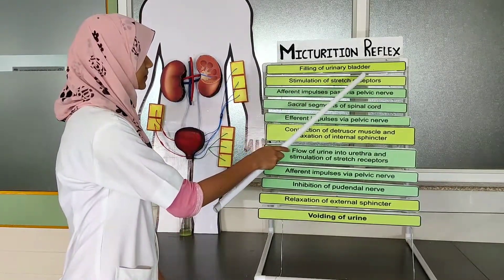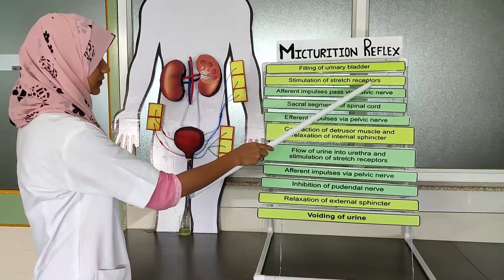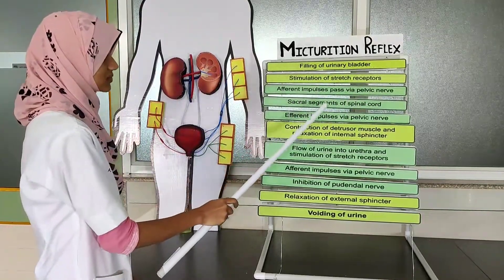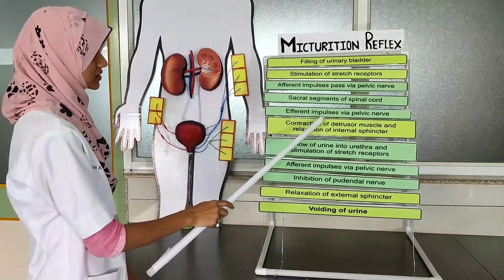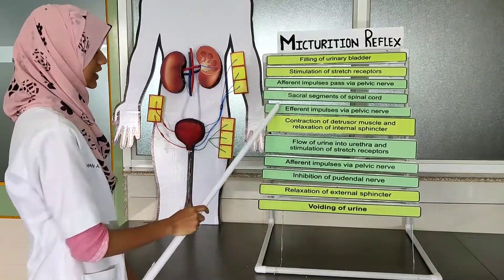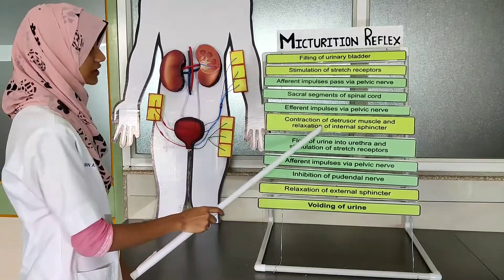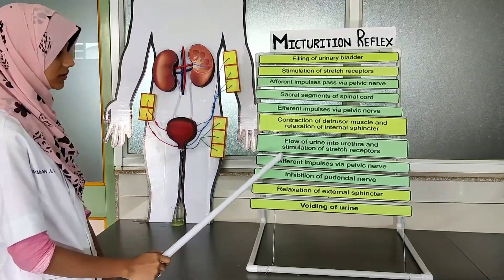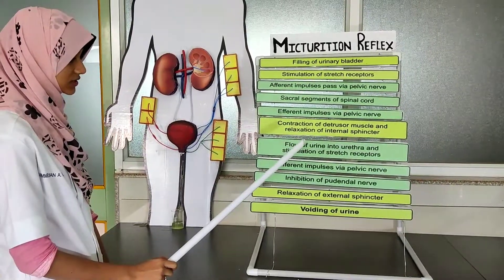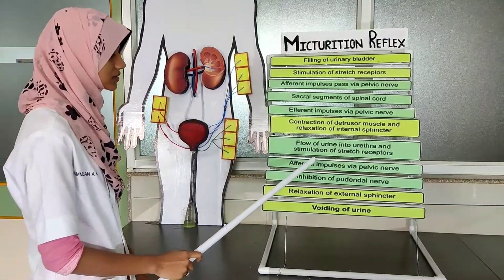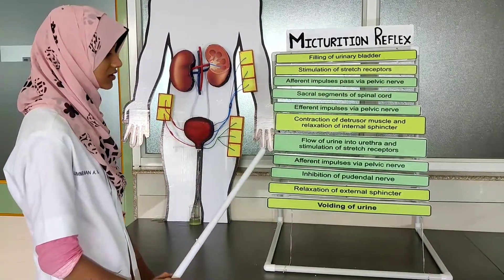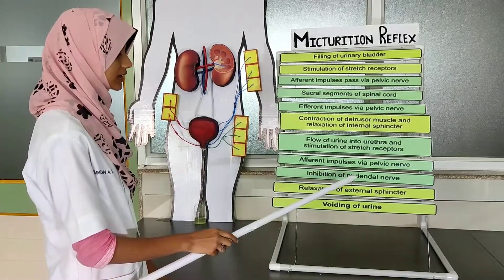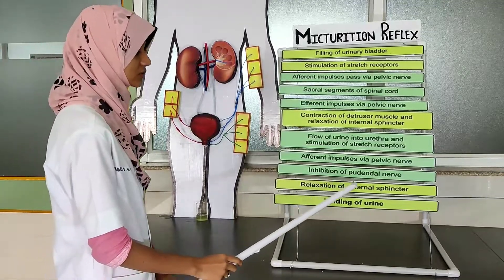To summarize the micturition reflex: filling of the urinary bladder leads to stimulation of stretch receptors, which produce afferent impulses passing via the pelvic nerve to the sacral segment of the spinal cord. Efferent impulses then pass through the pelvic nerve to the urinary bladder, causing contraction of the detrusor muscles and relaxation of the internal sphincter. Urine flows into the urethra, stimulating stretch receptors again, which produce afferent impulses via the pelvic nerve to the sacral segment. The resulting efferent impulses inhibit the pudendal nerve, causing relaxation of the external sphincter and voiding of urine.